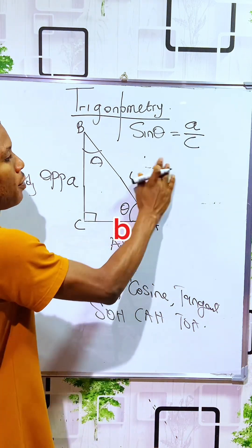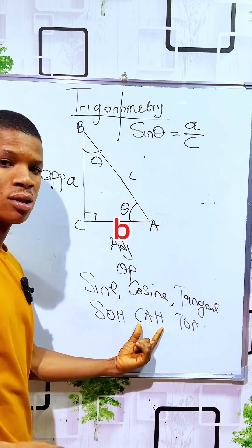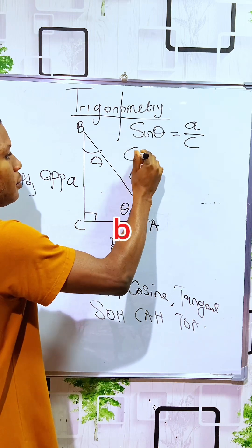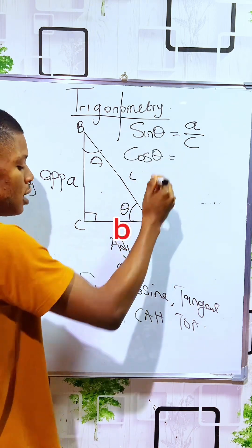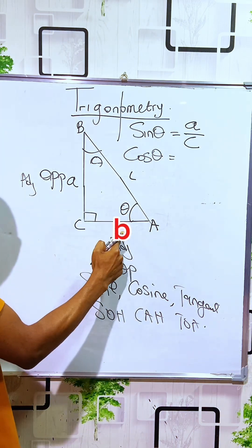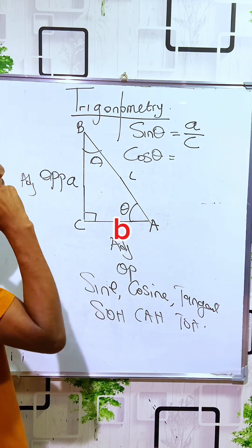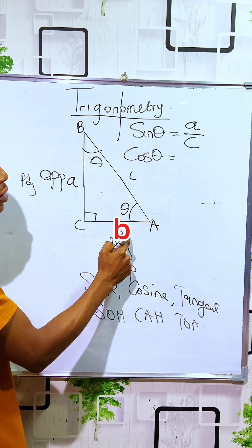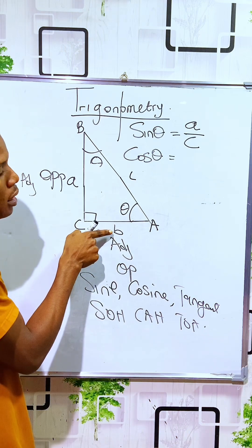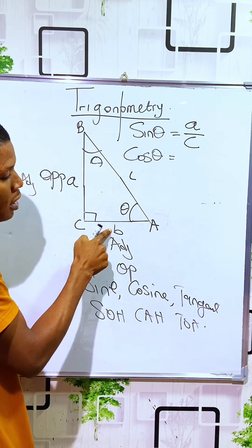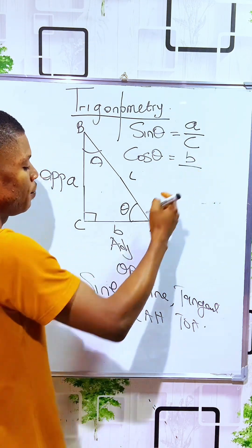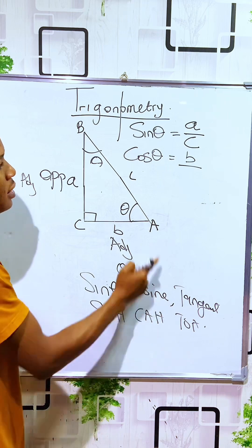The next ratio is cosine theta, which is the ratio of the adjacent over the hypotenuse. The adjacent side here is side B, so cosine theta equals B over the hypotenuse, which is side C.